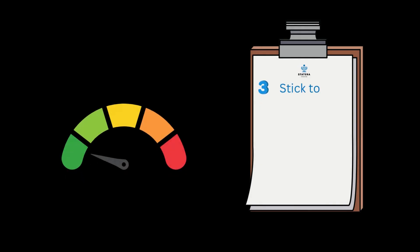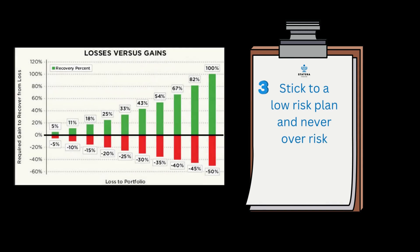Number three: stick to a low risk plan and never over-risk. The reason we tell you this is — say if you go and risk 2% per trade using our algorithm. We know that we can go on a 12 to 13 loss streak. So at 2% with 13 losses in a row, that would be a 26% loss, and that's consecutive losses — the losses could keep coming over a longer period of time.